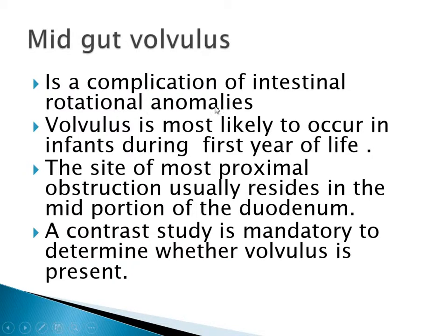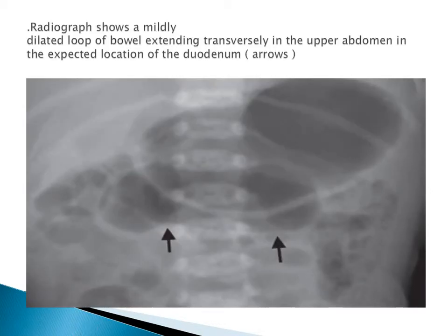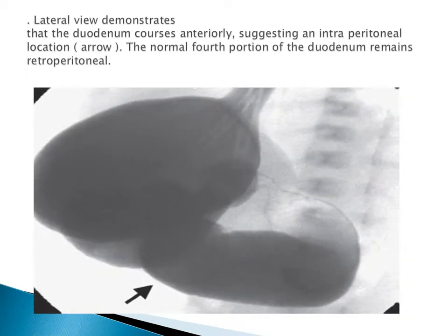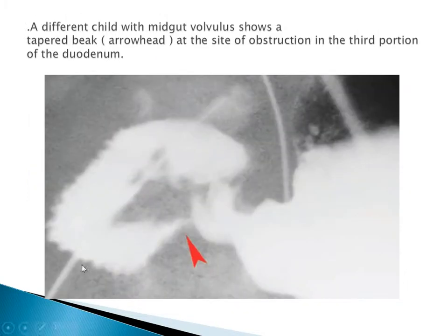Midgut volvulus is a complication of intestinal rotational anomaly. Volvulus is most likely to occur in infants during the first year of life. When the site of most proximal obstruction resides in the mid portion of the duodenum, contrast study is mandatory to determine whether volvulus is present. Radiographs show mildly distended loops of bowel extending transversely in the upper abdomen at the expected location of the duodenum. A different child with midgut volvulus shows a tapered beak at the site of obstruction in the third portion of the duodenum.